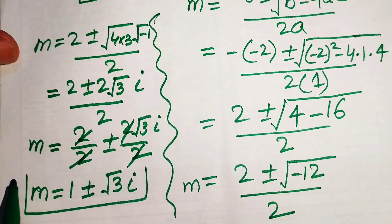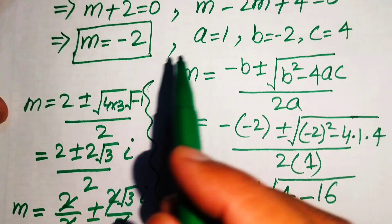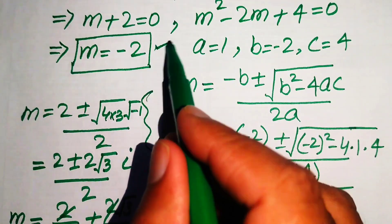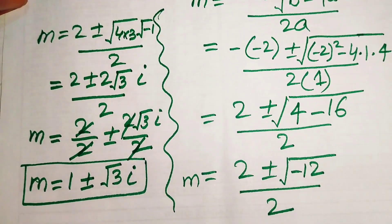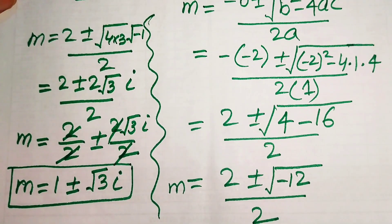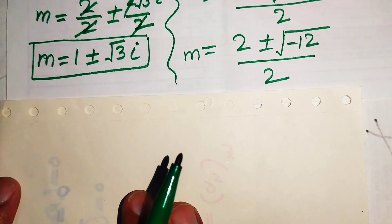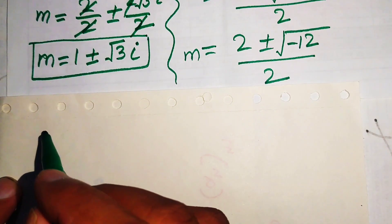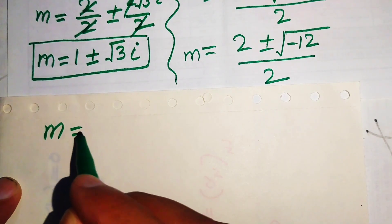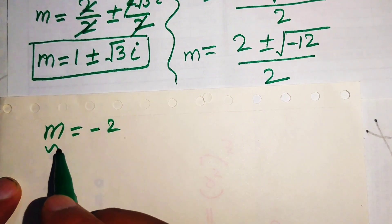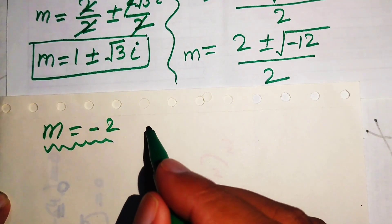These are the two complex roots of the given equation, and m equals minus 2 is the one real root. So these are the three roots of the given equation. In the next step, we check whether these solutions satisfy the original equation.